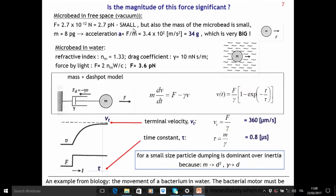If this bead is in free space, the acceleration is 34 times gravitational acceleration — very big, because the bead is small, the mass is small, so the acceleration is big even for a small force. If the bead is in water, we have fast damping due to the water, and the bead is accelerated but very soon reaches a terminal velocity of 360 micrometers per second, which for the micro world is a big velocity. The time constant is 0.8 microseconds, which is small. It is to be noticed that for a small size particle, damping is dominant over inertia, because the mass goes with the size to the third while the drag coefficient goes with size.